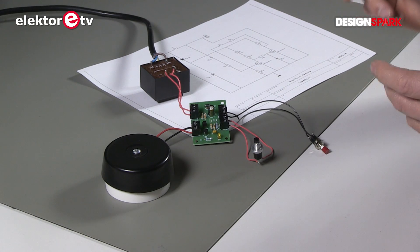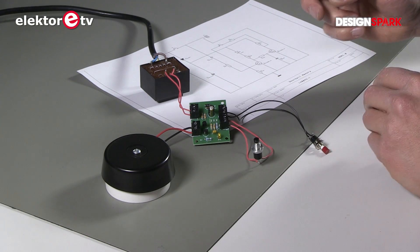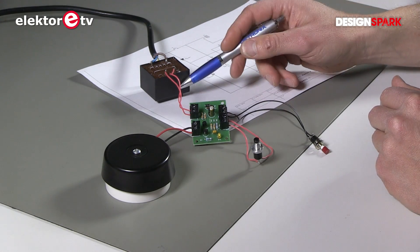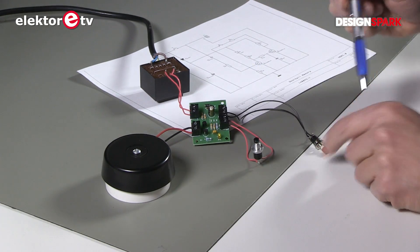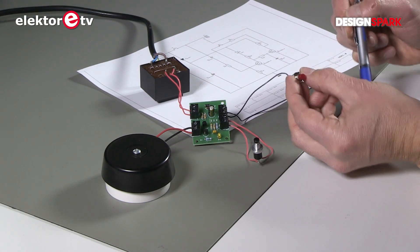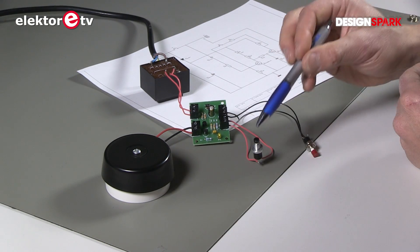So here we have the circuit in a lab setup: the main transformer, the bell transformer, the doorbell, the circuit, the push button next to the door, and this is the reset button.